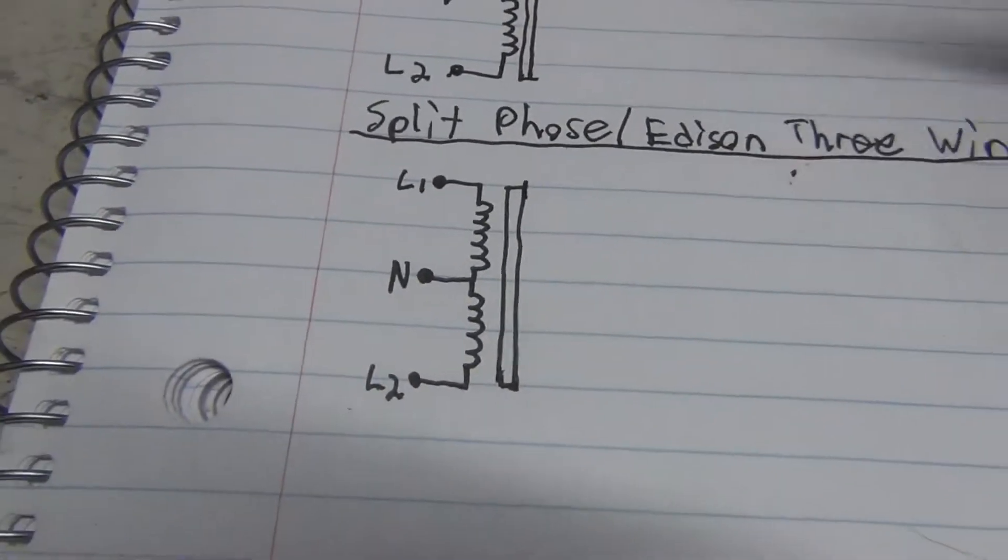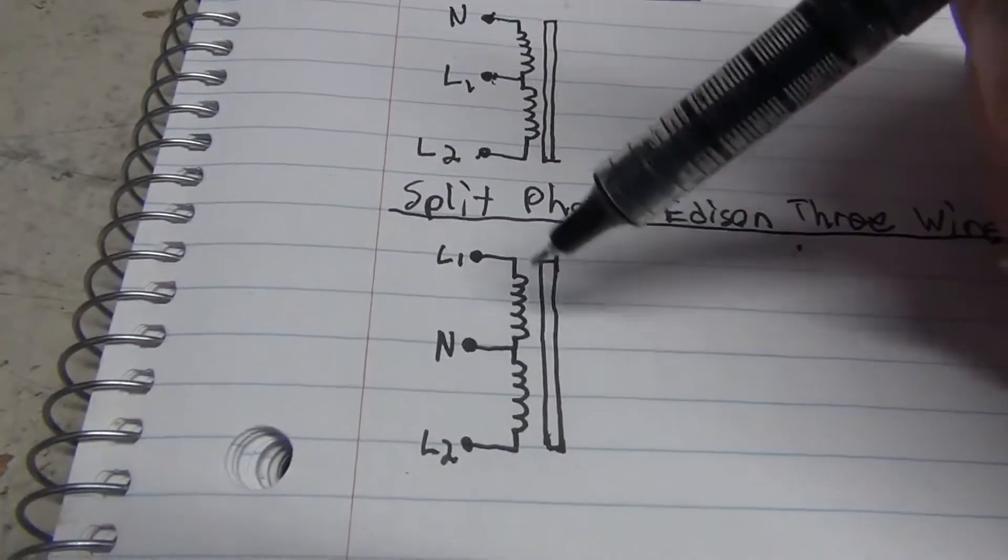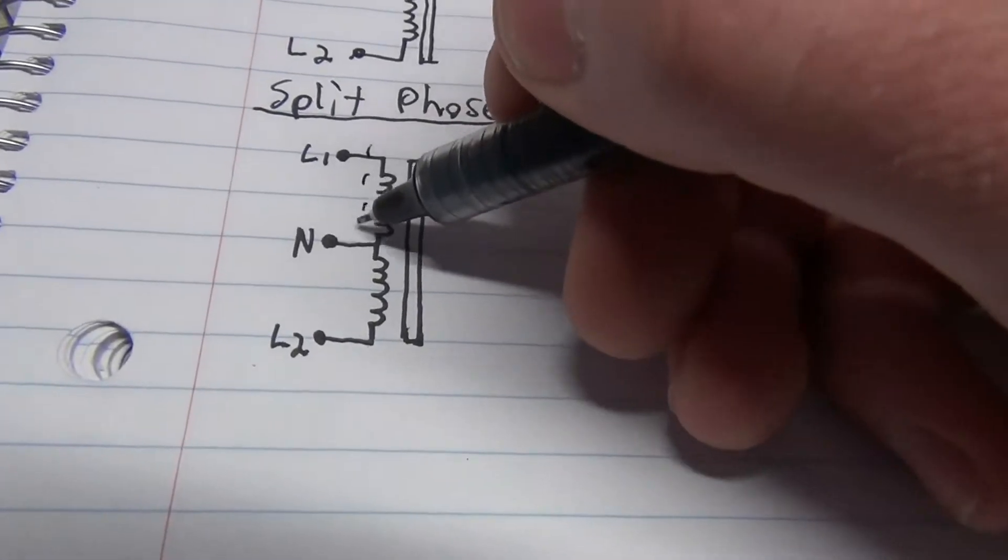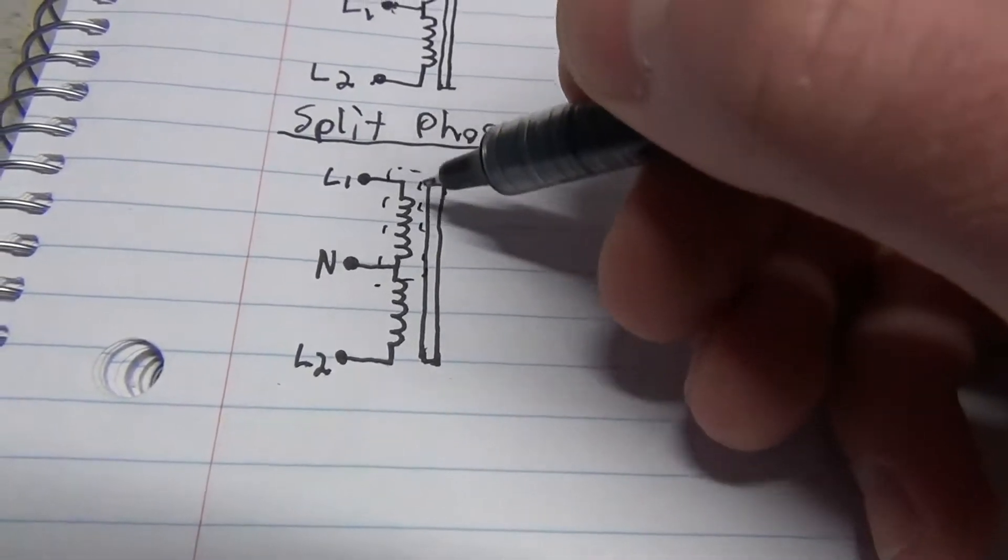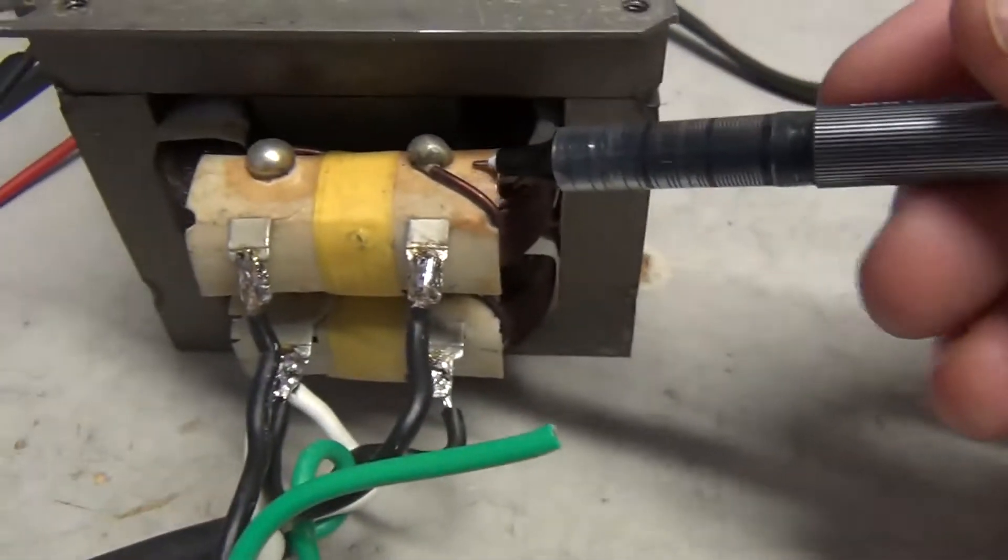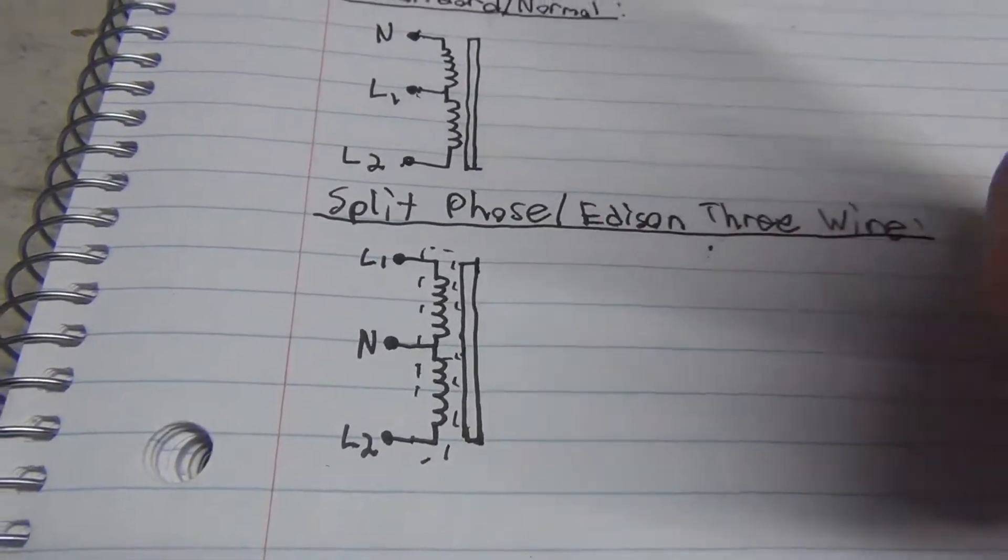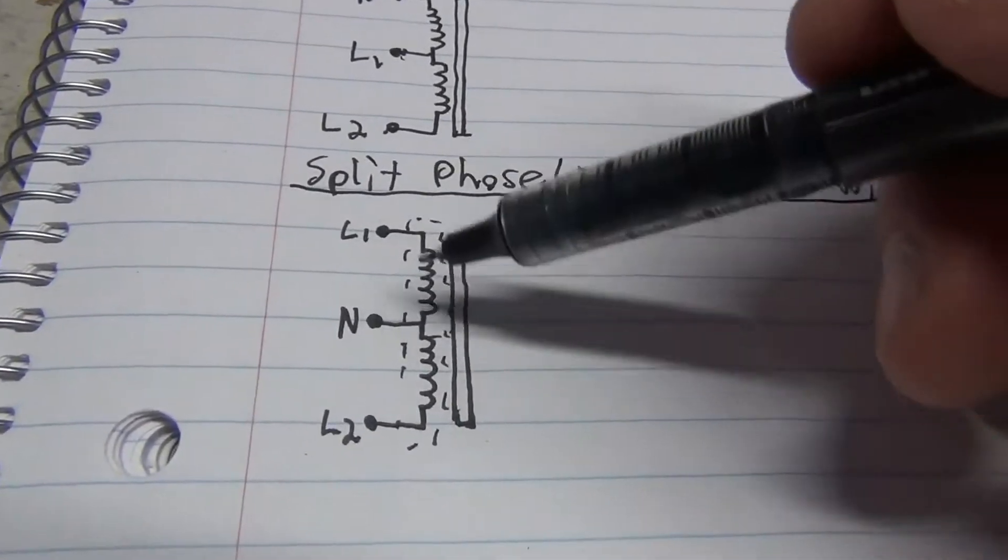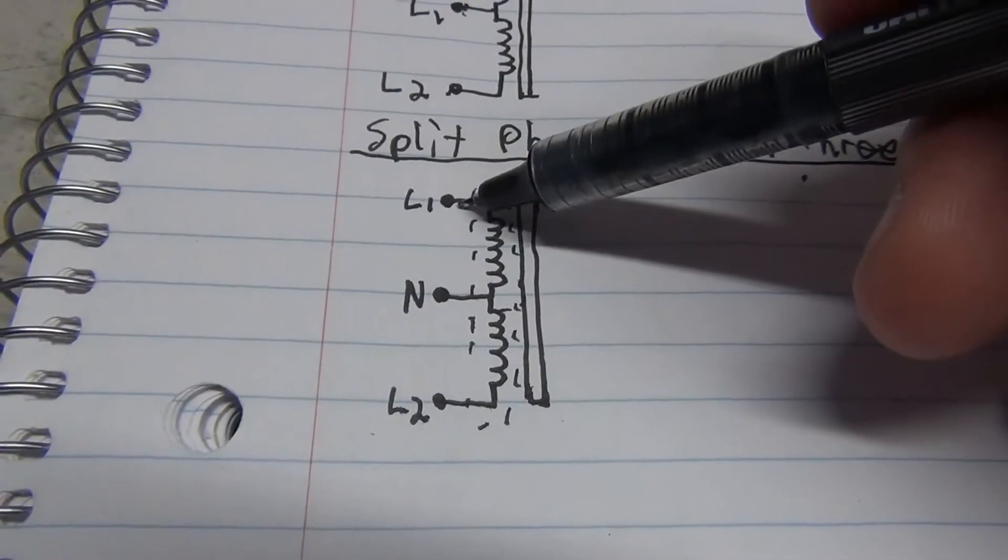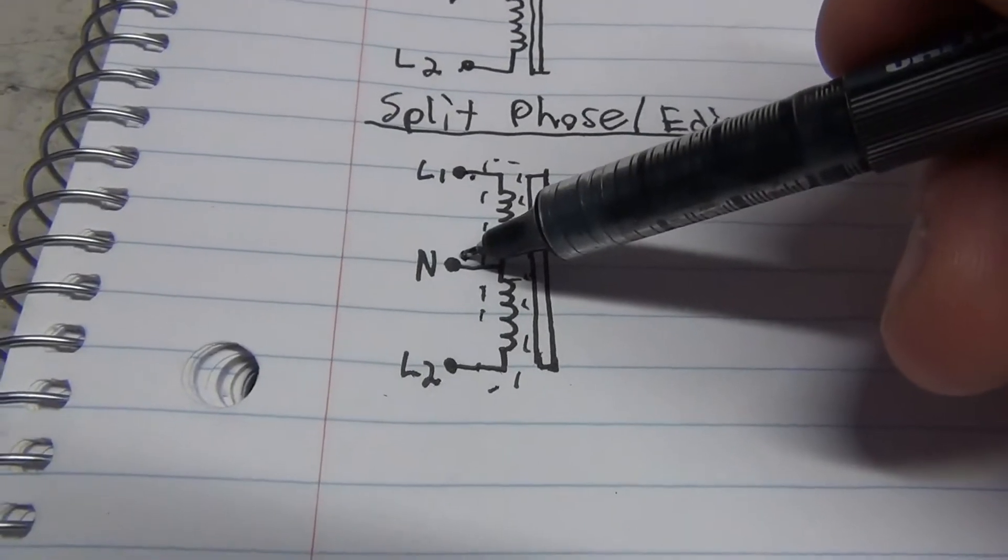So what you need is a different configuration set up like this. You have your one coil here and then your second coil would be here. First and second. You can pick either one to be your primary coil, or the one you want to drive from mains. And then you got your first line and then neutral in the center and line 2.